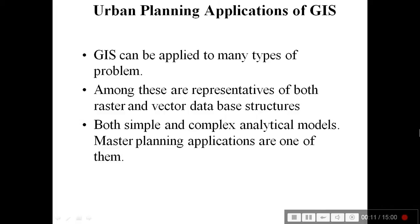Let's talk about urban planning applications of GIS. GIS can be applied to many types of problems. Among these are representative of both raster and vector database structures. We know there are two types of data generally employed or used in GIS: raster and vector.